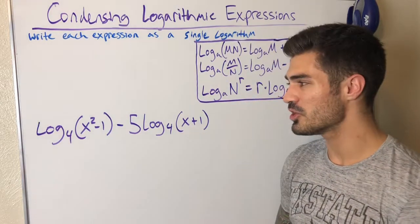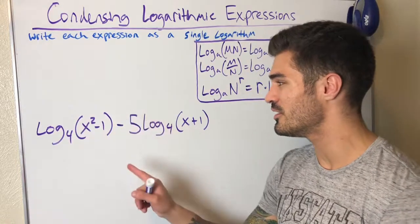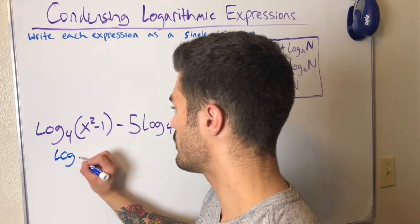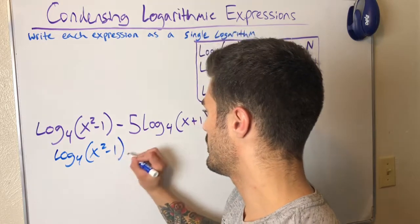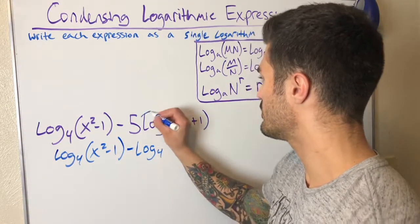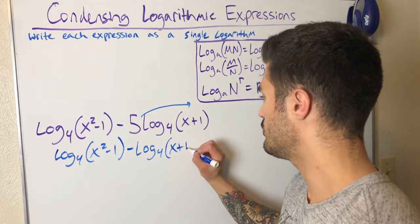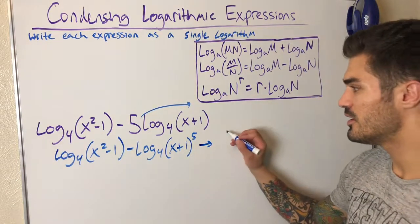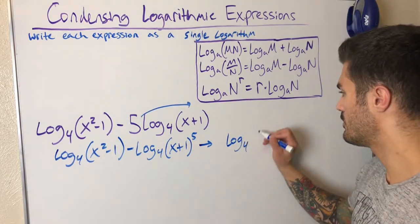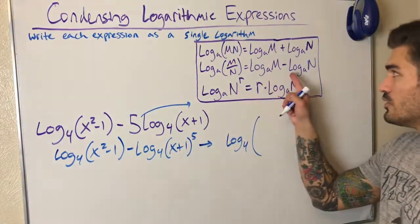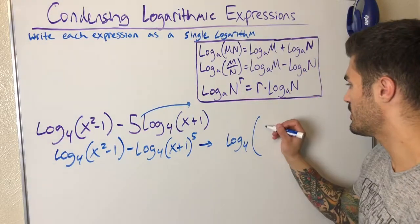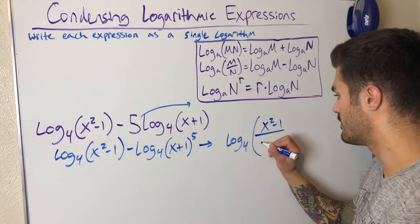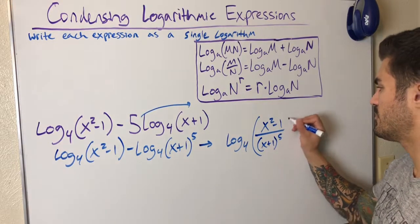This is our last example — go ahead and try it on your own, but I'll start. I have no factors out in front for the first log, but I can bring this 5 up as an exponent. Log base 4 of x squared minus 1 stays the same, minus log base 4 with the 5 going up to the exponent, so log base 4 of x plus 1 to the 5th power. Now I can combine these — I'll draw my little arrow — log base 4, going from subtraction to division, so x squared minus 1 is on top.